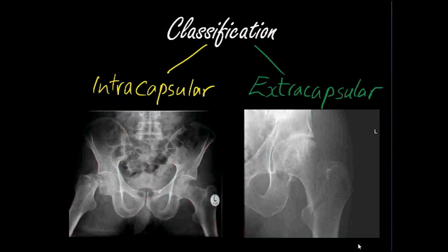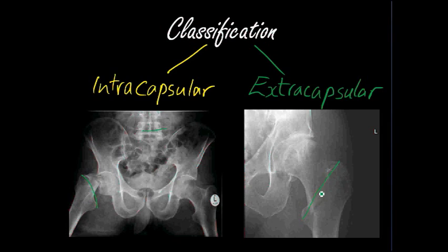Broadly speaking, hip fractures are classified as intracapsular or extracapsular, and being able to distinguish this is quite important because the management is entirely different. If we take the intratrochanteric line of this hip, a fracture above this is considered intracapsular; a fracture including this line or below is extracapsular. Here's an example of intracapsular and here's an example of extracapsular — you can see the fracture has taken place below the intratrochanteric line. A fracture including the intratrochanteric line is also considered extracapsular.